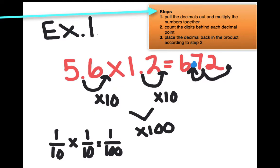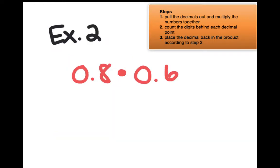Example 2 says find the product using mental math. Let's look at that one next. Here our problem is 8 tenths times 6 tenths. Now think about this: if the problem was just 8 times 6, we can do that in our head, right? 8 times 6 is 48.